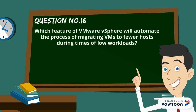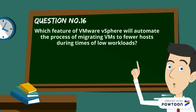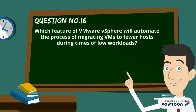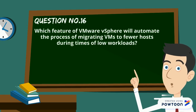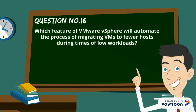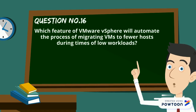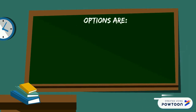Which feature of VMware vSphere will automate the process of migrating VMs to fewer hosts during times of low workloads? The options are: A) FD, B) EVC, C) DPM, and D) HA.